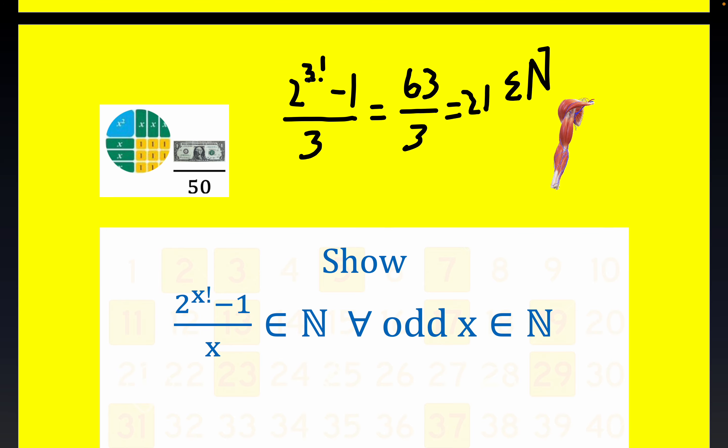But just going up to 5 creates issues. 5 factorial is 120, and already we have an unpronounceable number. So we want to show that this is true for all odd, it holds for all odd natural numbers, this result right here.